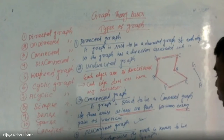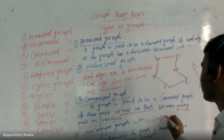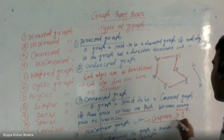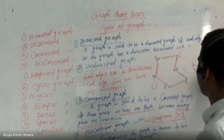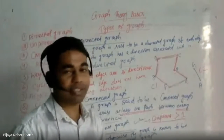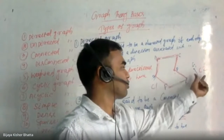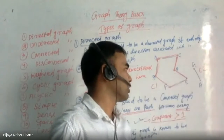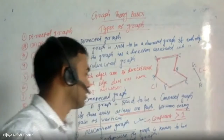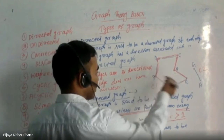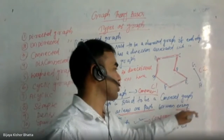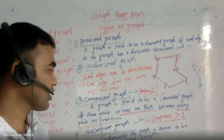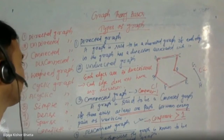In a disconnected graph, one important terminology comes into picture: component. Remember, the number of components is always greater than one in a disconnected graph. Say this is component C1 and this is component C2 — there exist two disconnected components. If it is connected, the number of connected components is exactly one. In a disconnected graph, the number of connected components is greater than one.